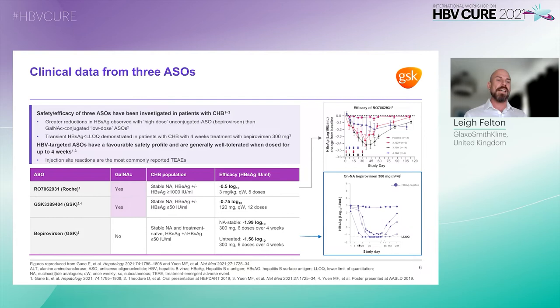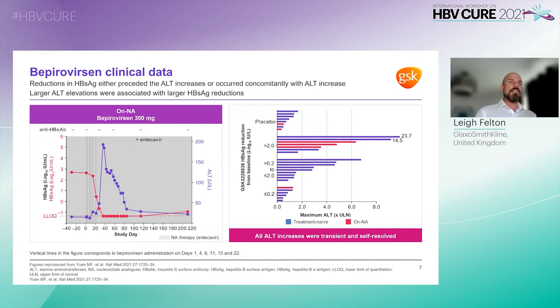As a whole, published data to date indicate that HBV-targeted ASOs are generally well tolerated when dosed for up to four weeks. Injection site reactions are the most commonly reported treatment-emergent adverse events.